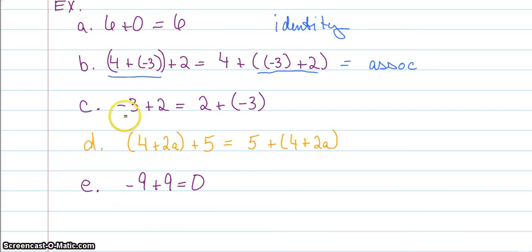On C, I have -3 + 2 = 2 + (-3). Well, I've just swapped the order around. I think of this as like my commute to work—the distance from home to work is the same as my distance from work to home. So it is the commutative property.